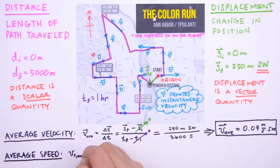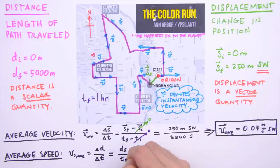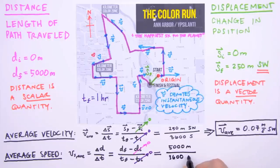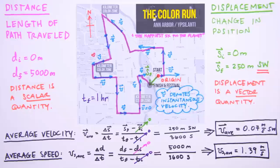Average speed is defined as a body's change in distance divided by the change in time. Expanding: d sub f minus d sub i divided by t sub f minus t sub i. Again, the initial values are both zero. For final distance we have 5,000 meters, and final time in seconds is 3,600. This implies that our average speed is 1.39 meters per second — pretty pokey for a so-called runner, but it seems much more reasonable than the snail-speed value we got for average velocity.